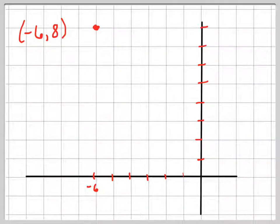The question asks us to find all six trig functions for the point negative 6, 8, the terminal side that ends at negative 6, 8.